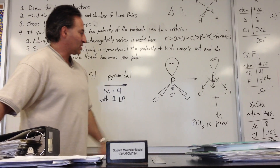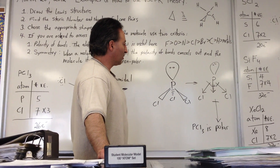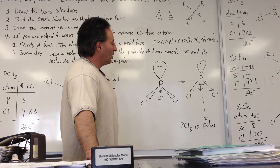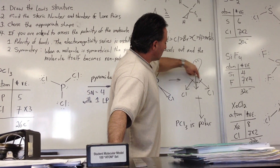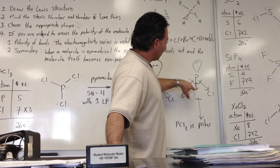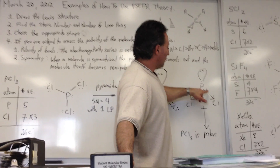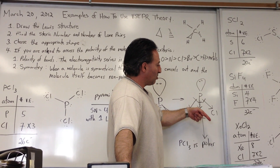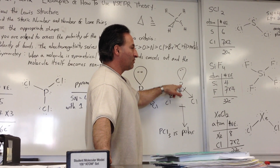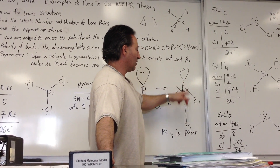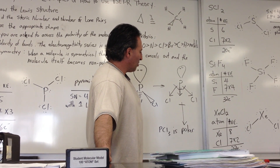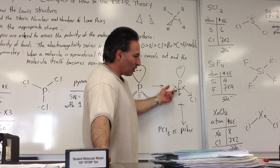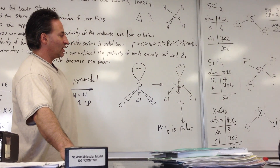One way of drawing a pyramidal shape is to make it look like a stool — two chlorine atoms coming out at you and one going behind the plane of the board. I like to draw the lone pair as a ghost. To show polarity, redraw the molecule so two bonds are in the plane of the board. The arrow points toward the more electronegative element — chlorine — with a plus sign on the phosphorus side. All three dipole vectors point downward, so the net dipole is downward. This is a polar molecule.